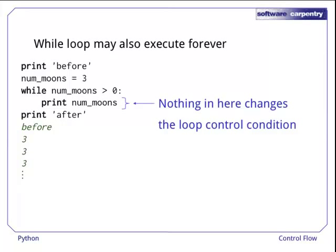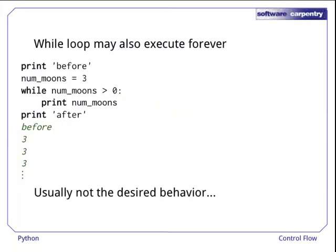Since the loop's control condition was true when the loop started, and nothing happens inside the loop to change it, the loop will run until the user gets bored enough to halt it. This is usually not the desired behavior, but there are cases we'll see later where an apparently infinite loop is useful.